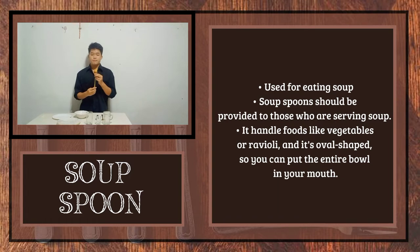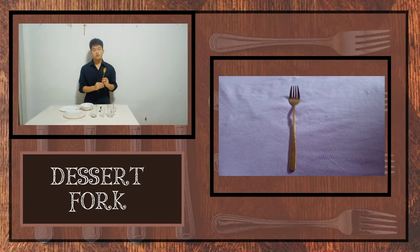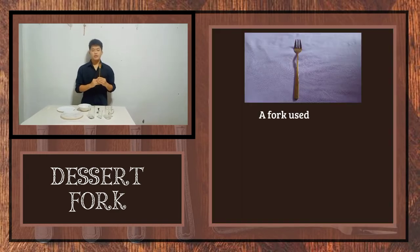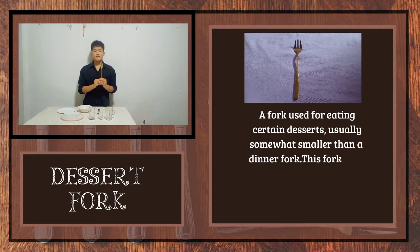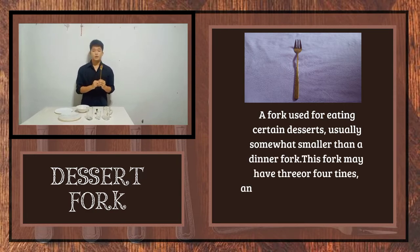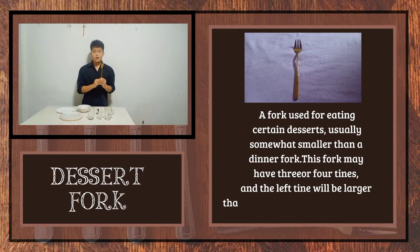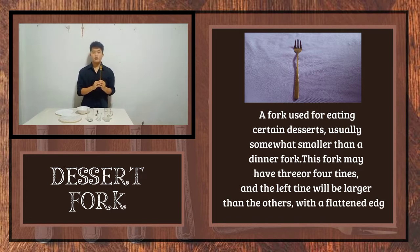The next example of tableware is the dessert fork. A dessert fork is used for eating certain desserts and is usually somewhat smaller than a dinner fork. This fork may have three or four tines, and the leftmost tine will be larger than the others with a flattened edge.